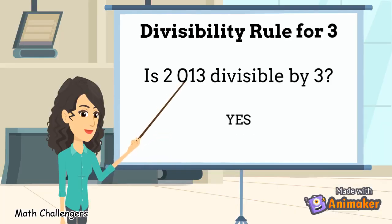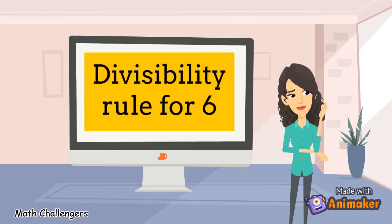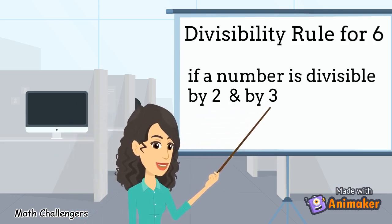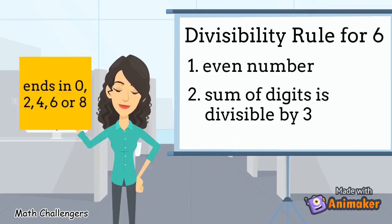Divisibility rule for 6: How do we quickly know if a number is evenly divided by 6? A number is divisible by 6 if it is divisible by both 2 and 3. We have two conditions: the number must be an even number, and the sum of its digits must be divisible by 3.